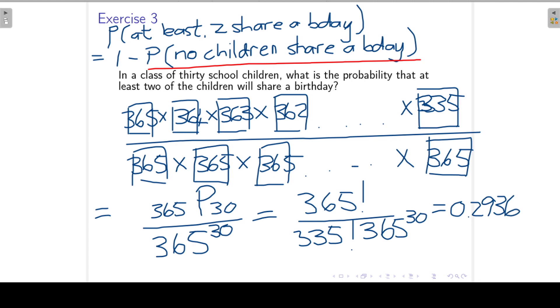So to get back to our original question, to find the probability at least two share a birthday, that will then be 1 minus our answer at the bottom, which equals 0.706 or 70.6 percent. So almost a 71 percent chance that in a group of 30 people, that at least 2 of those people will share a birthday.